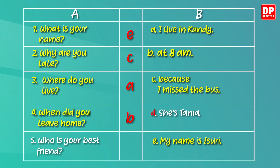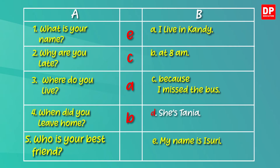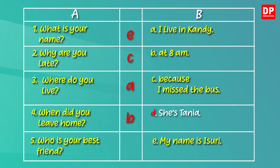In the last one, the question word is 'who' — who is your best friend? The question word 'who' expects you to give a person or people as your answer. The matching answer is the remaining one, D — she is Tanya.